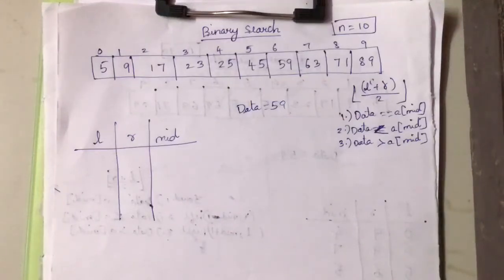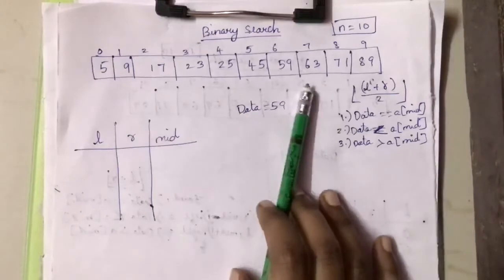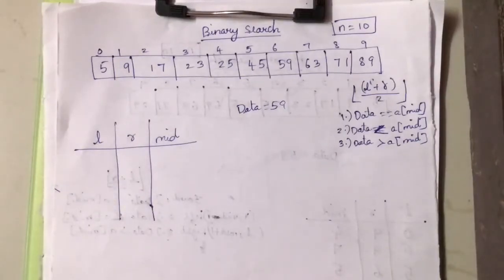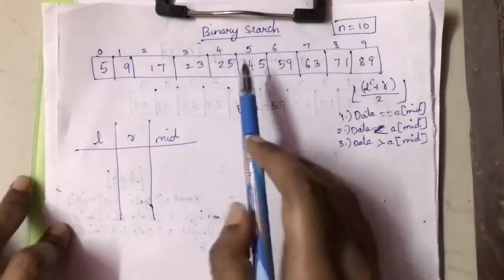Today we are going to see what is binary search. The first condition for binary search is that all the elements in the array must be in ascending order. If the elements are not in ascending order, we first need to arrange them using any sorting technique, then apply the searching condition.